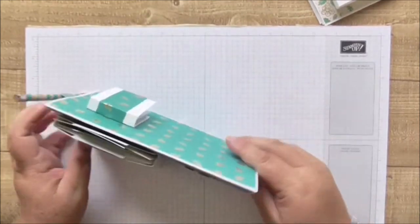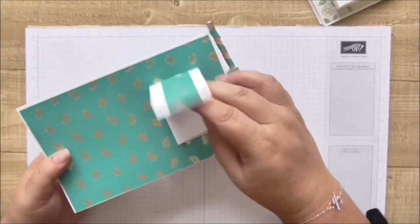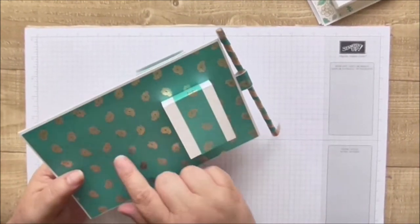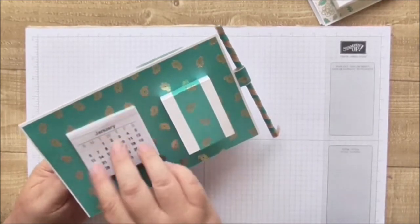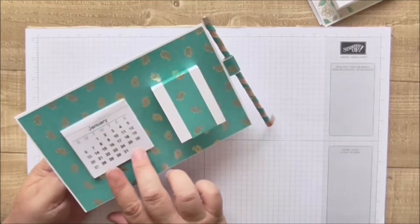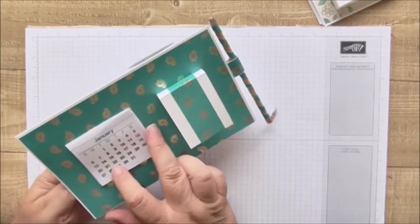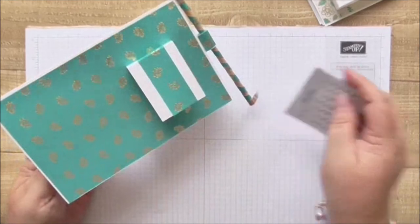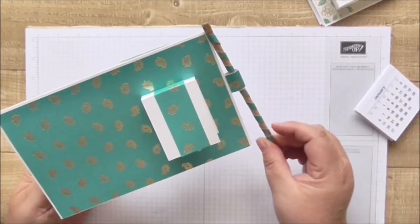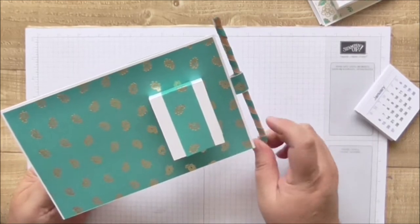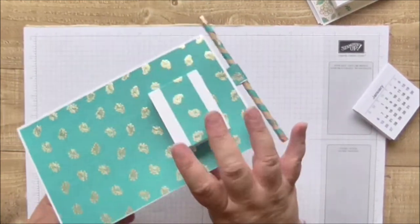You can change them around, and then on the other side I've done a little set of post-it notes. This space here is for a calendar, but when I did this first one I didn't have my 2019 calendars, but I have now. Then I just took a normal pencil and wrapped it with some washi tape and a strip of the paper glued on from that stack.